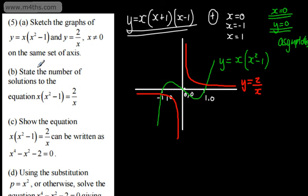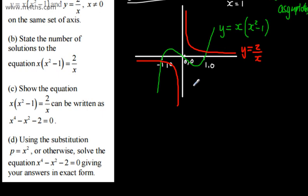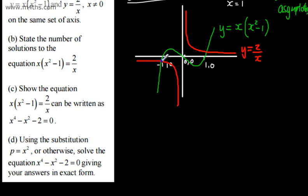In part B, we are to state the number of solutions to x(x² - 1) = 2/x. The answer is how many points of intersection do the two graphs have? The answer is two — one here and one here. So setting these equal asks where do they cross, and the answer is in two places.